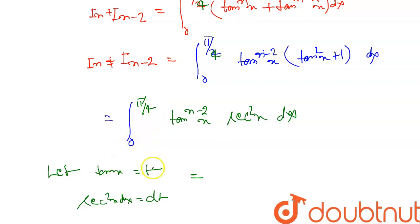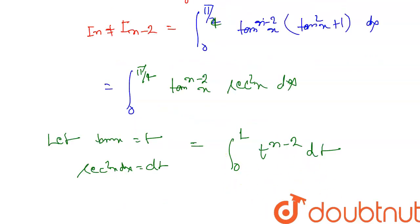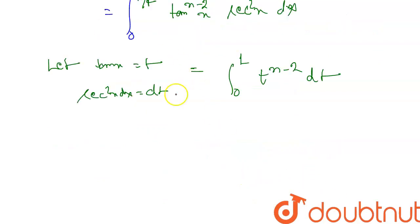The limits change: when x = 0, t = 0; when x = π/4, t = 1. So the integral becomes ∫₀¹ t^(n-2) dt.